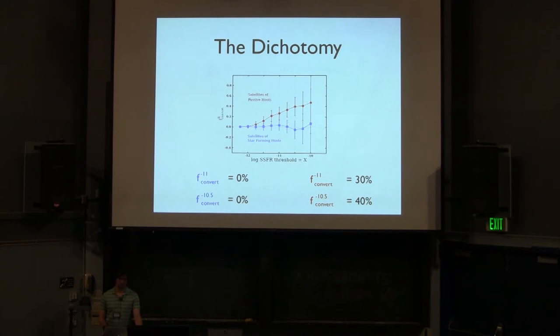So viewed in conversion fraction versus threshold-specific star formation rate space, we see that satellites of star-forming hosts are consistent with zero, consistent with the field over the entire range in threshold-specific star formation rate, whereas satellites of passive hosts are marginally more effective at being quenched if they come in vigorously star-forming. So it's about 30% as the f-convert minus 11. 30% of satellites are brought below minus 11 in their star formation rate, and 40% are brought below the vigorous threshold of 10 to the minus 10.5.